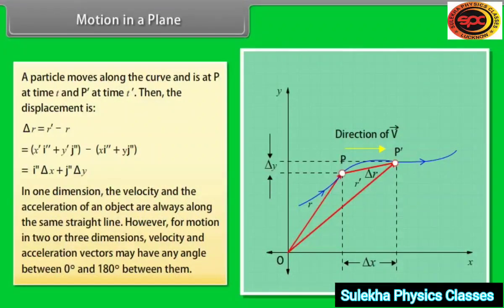In one dimension, the velocity and the acceleration of an object are always along the same straight line. However, for motion in two or three dimensions, velocity and acceleration vectors may have any angle between 0 degree and 180 degree between them.